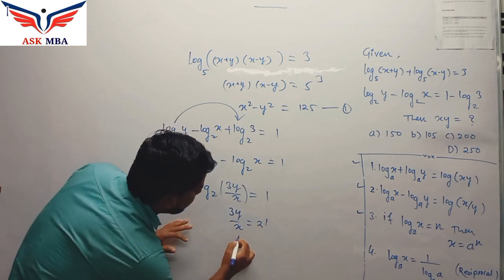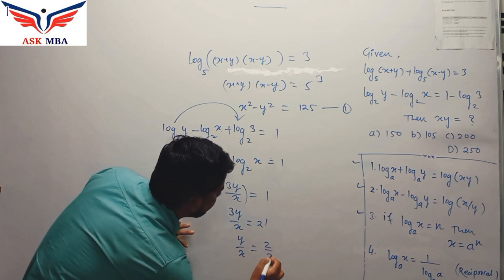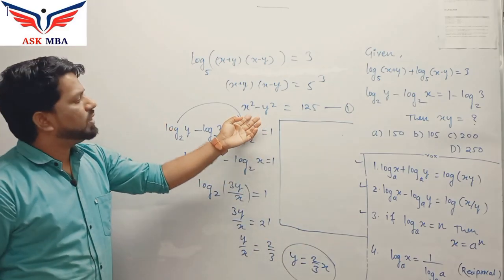So we will write 3y by x is equal to 2 power 1. This will be 2. So we can get ratio of y to x is equal to 2 by 3. Use this y equal to 2 by 3 of x in the first equation.